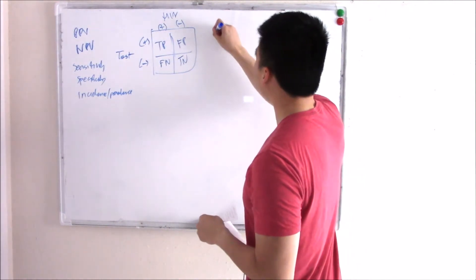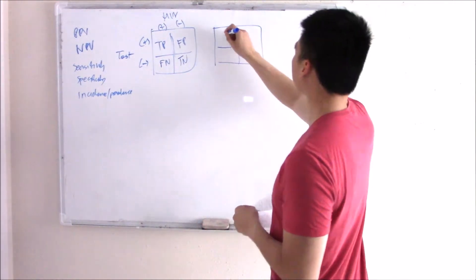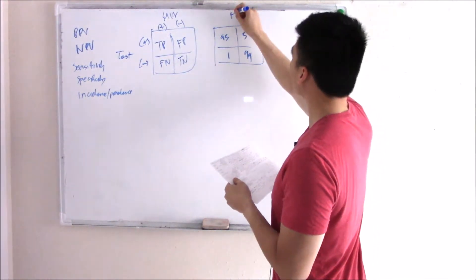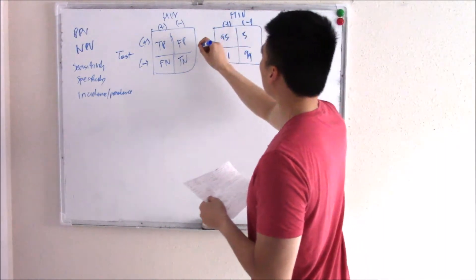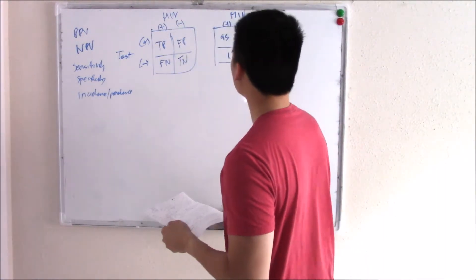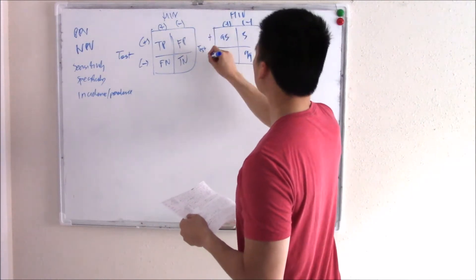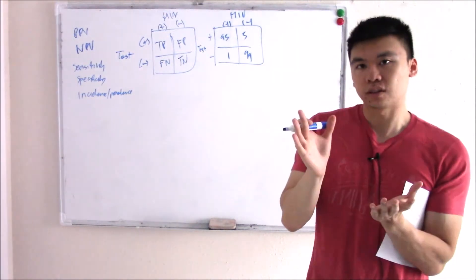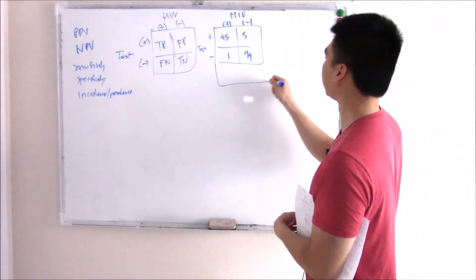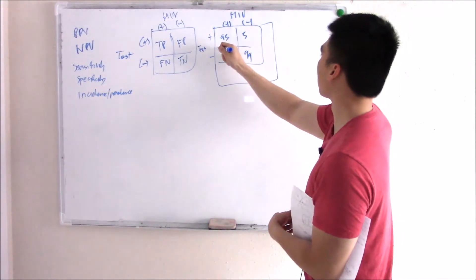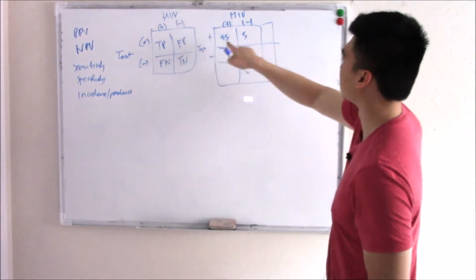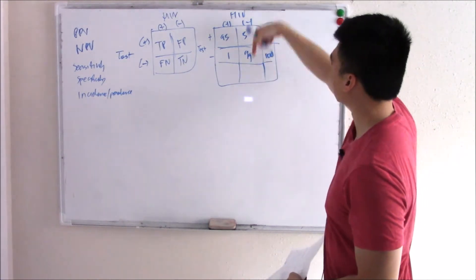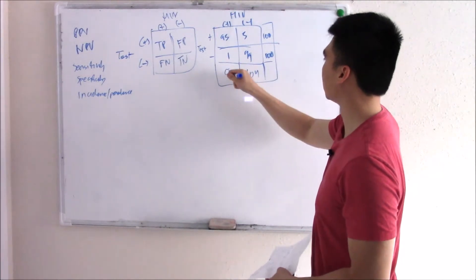Let's do another example with HIV — positive, negative — and our test, positive, negative. I just filled in some random numbers for illustrative purposes. I prefer 3x3 tables, so let's add the totals. The totals come out to 100, 100, 100, 104, and 96.